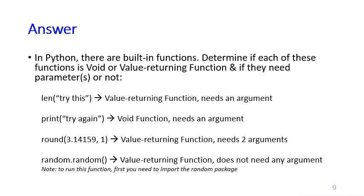The len function is a value-returning function — it needs an argument, the string. The print function is a void function — it needs an argument. The round function is a value-returning function — it needs two arguments: the value you want to round, and how many decimal places to keep after the dot. Finally, the random function is a value-returning function, but it does not need any argument.